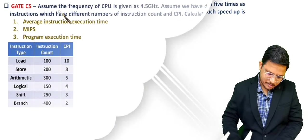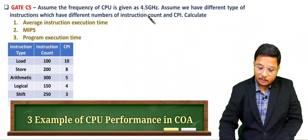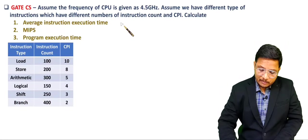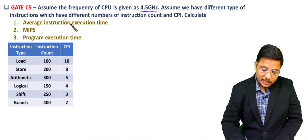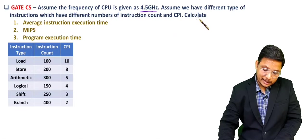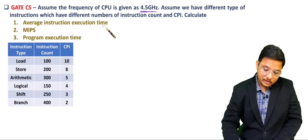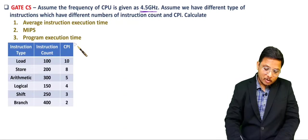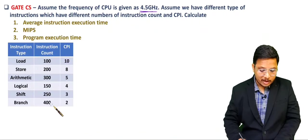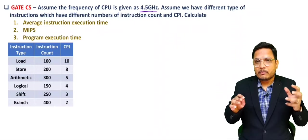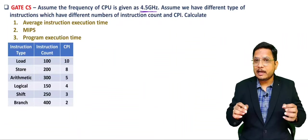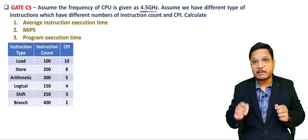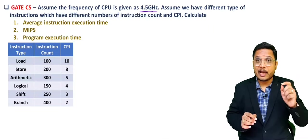Let us have one more interesting question. Assume the clock frequency of CPU is given as 4.5 GHz. We have different types of instructions with different instruction counts and CPI values. We need to calculate: average instruction execution time, MIPS (millions of instructions per second), and program execution time. First, we must calculate average CPI (clocks per instruction).